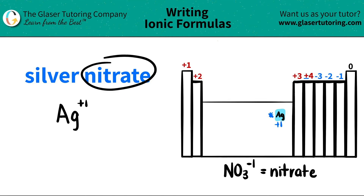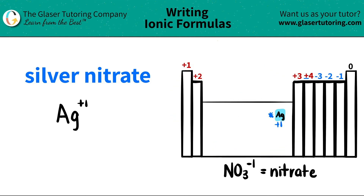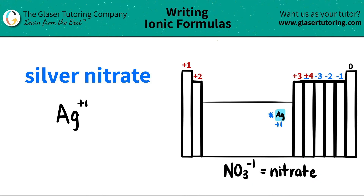Now I work on the next part. I see that I have nitrate. It's an ATE ending. And remember, all ATE endings are never on the periodic table — they are polyatomic ions. For the sake of this video I wrote down what nitrate was, but you guys have to memorize. Use flashcards, do whatever you got to do to memorize that nitrate is NO3 with a minus one charge.